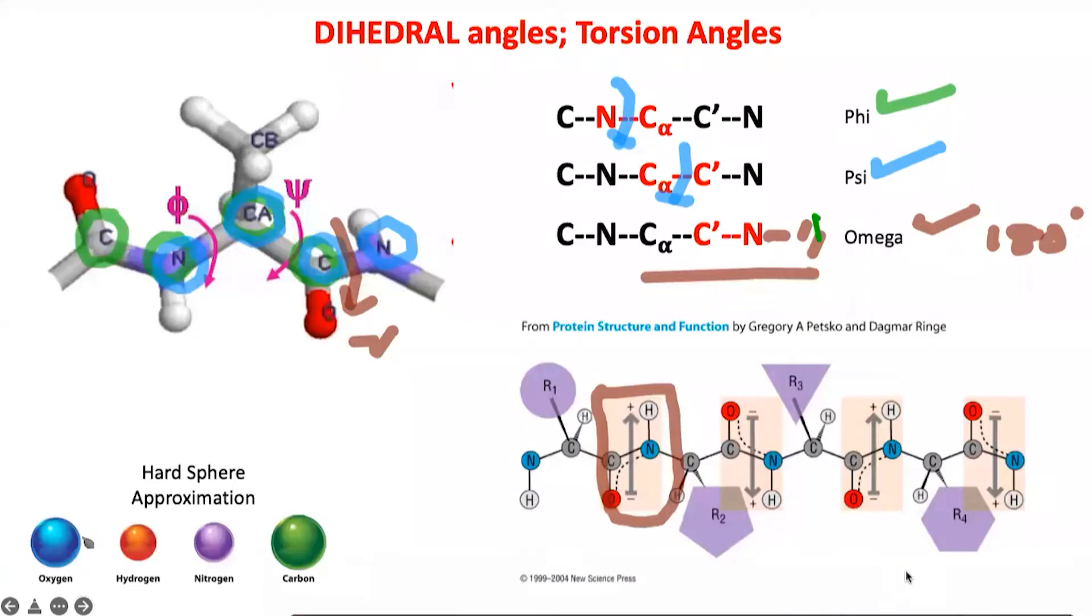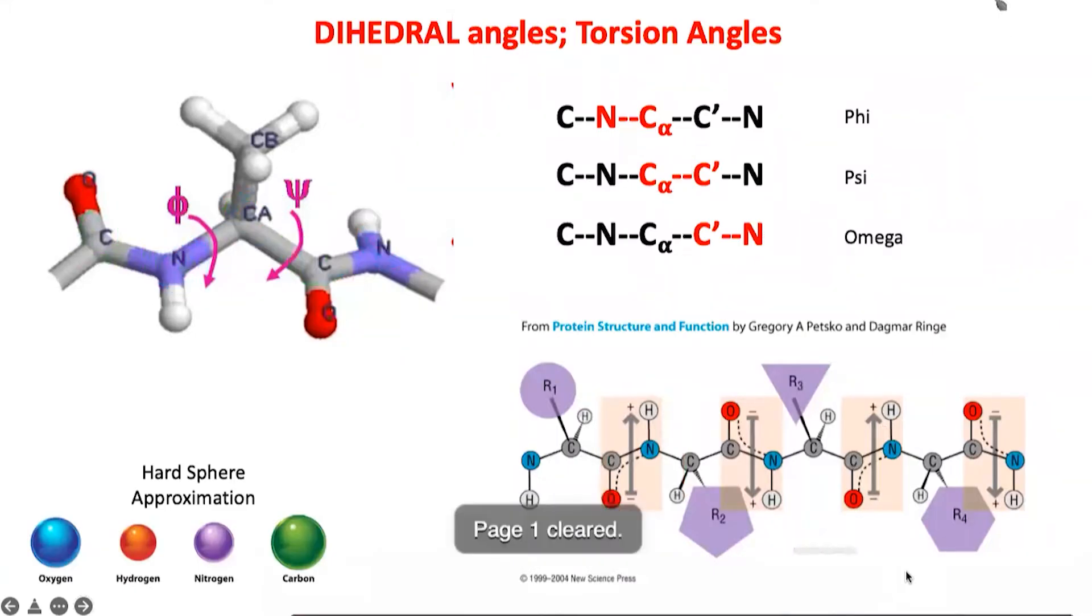And remember that one can approximate each of these atoms which we are talking about—carbon, nitrogen, hydrogen, oxygen—as hard spheres. The sphere basically dictates the electron cloud around these atoms. This is called as a hard sphere approximation, and I'll come to why this is very important.